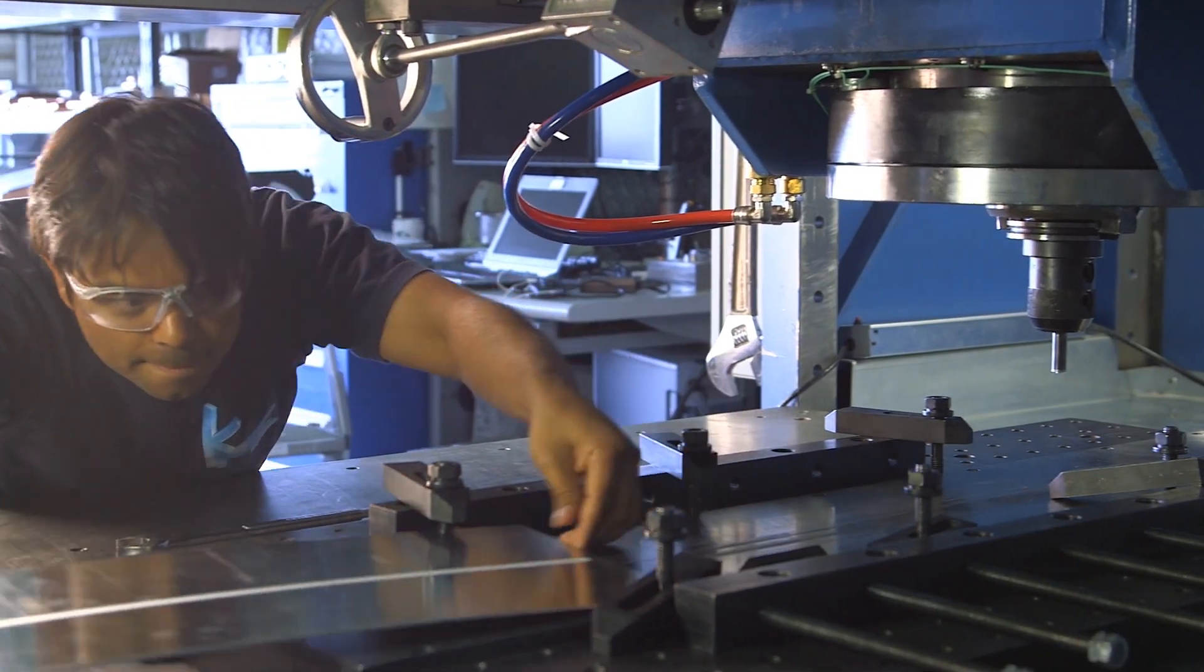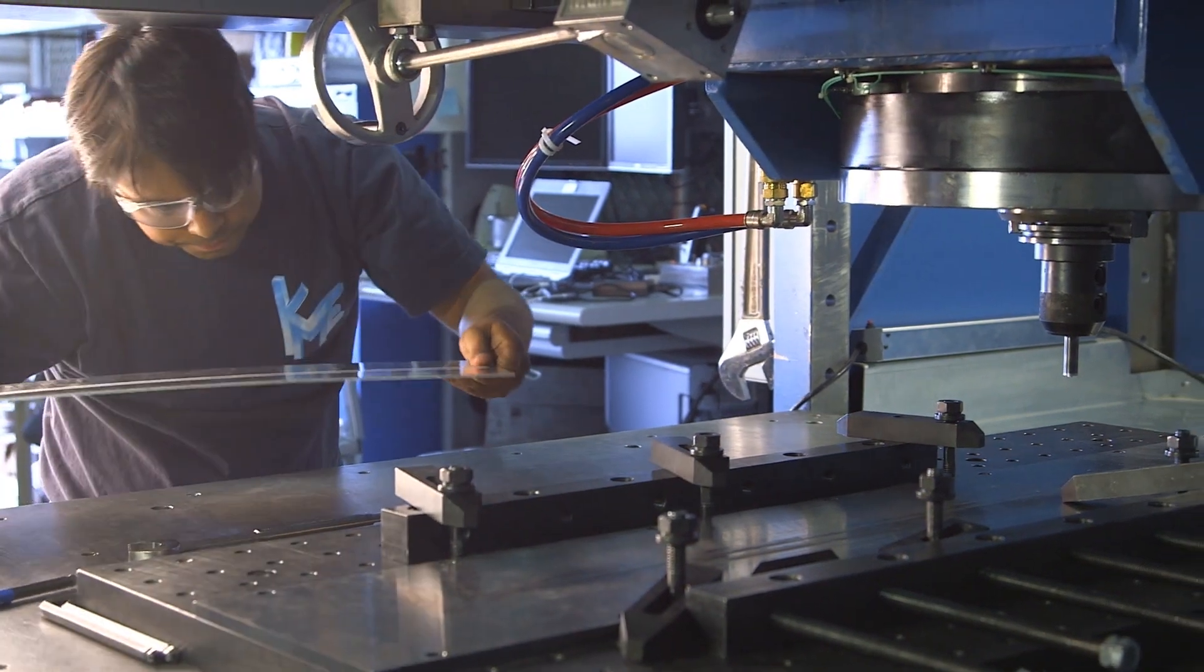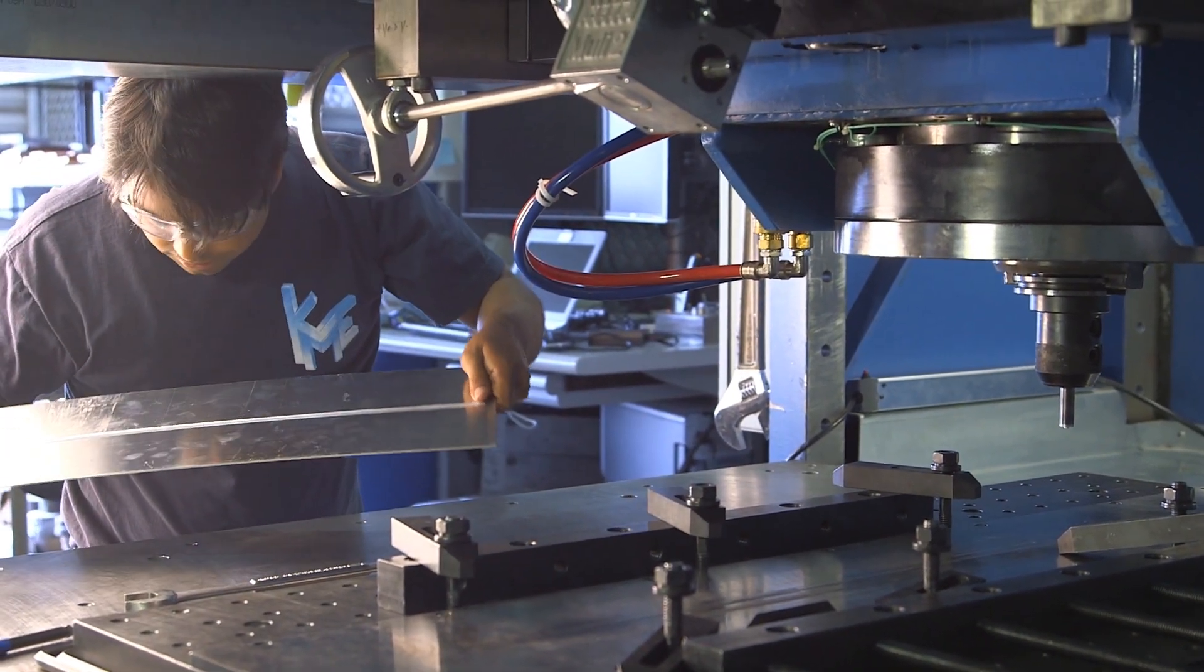Traditionally the automotive industry has considered friction stir welding too slow of a process to put into high volume manufacturing. Here at PNNL we increased the friction stir welding process from less than 1 meter a minute to 3 meters a minute and beyond, which enables that process to be used now for high volume automotive manufacturing.